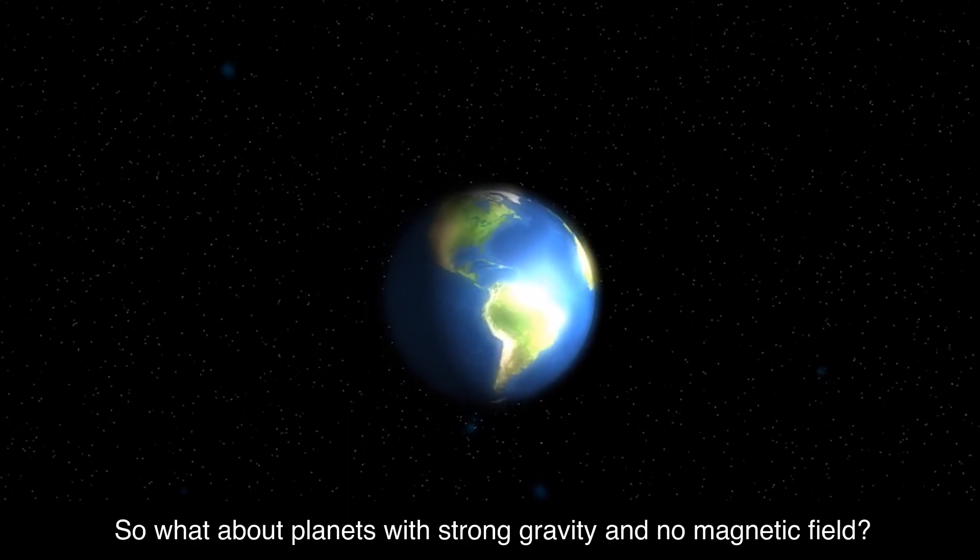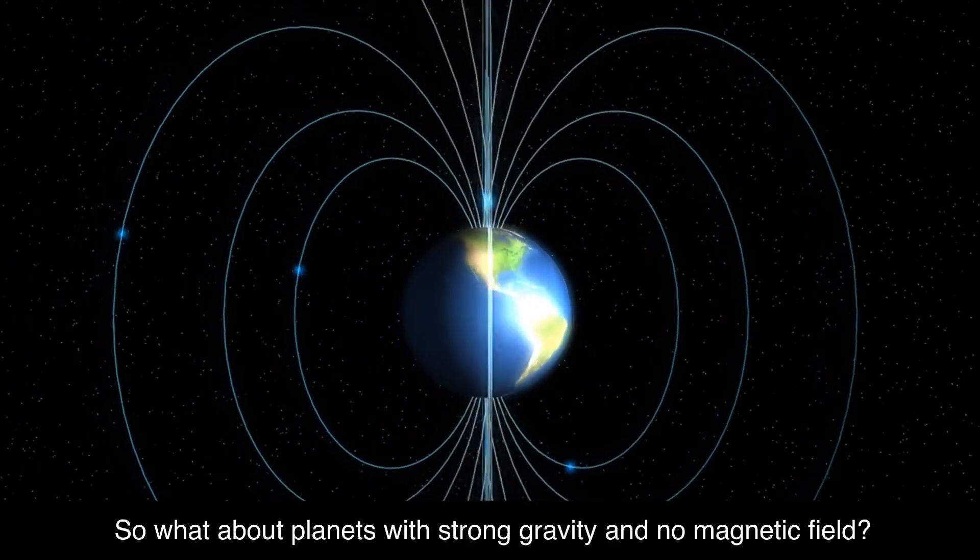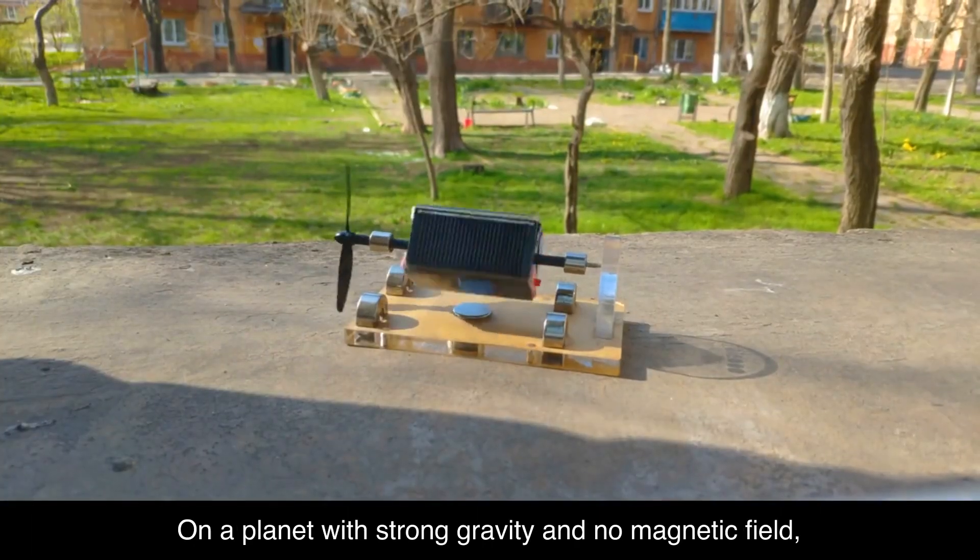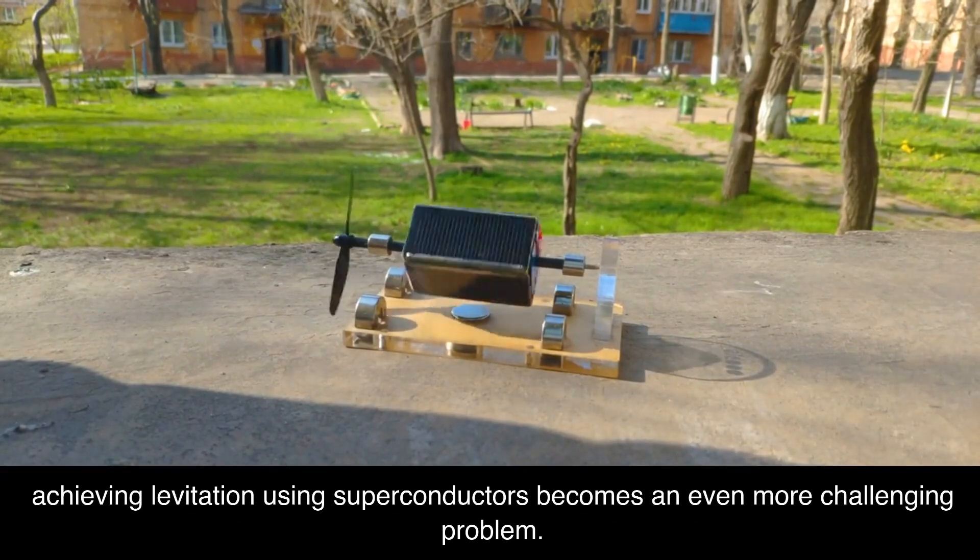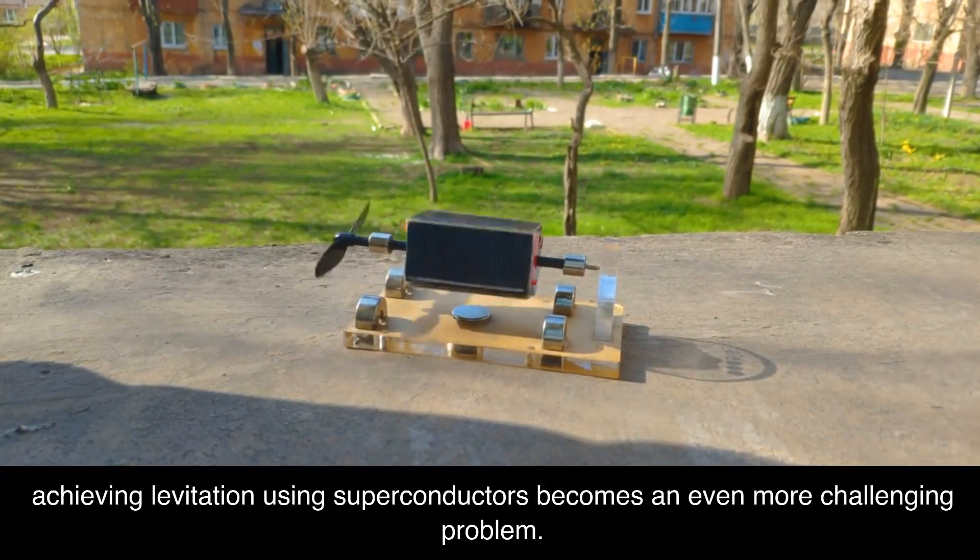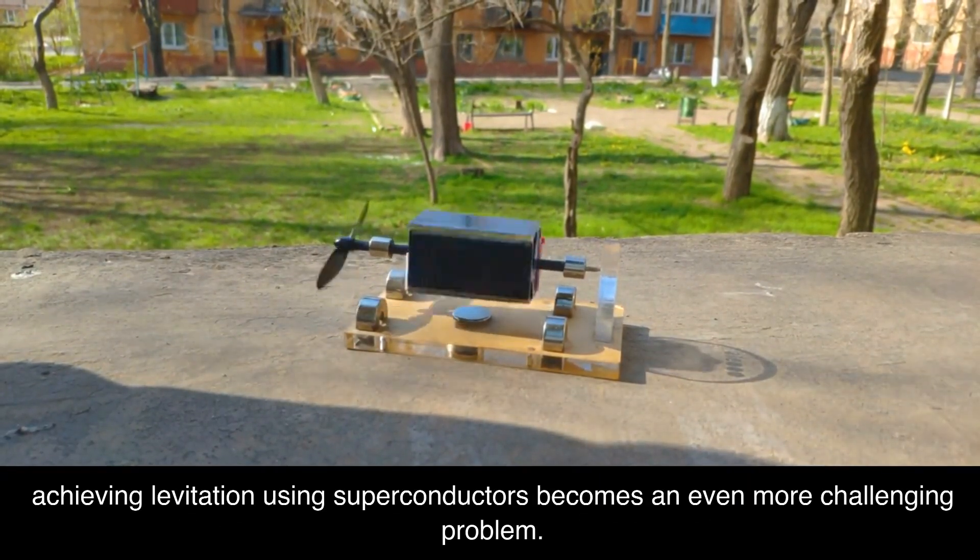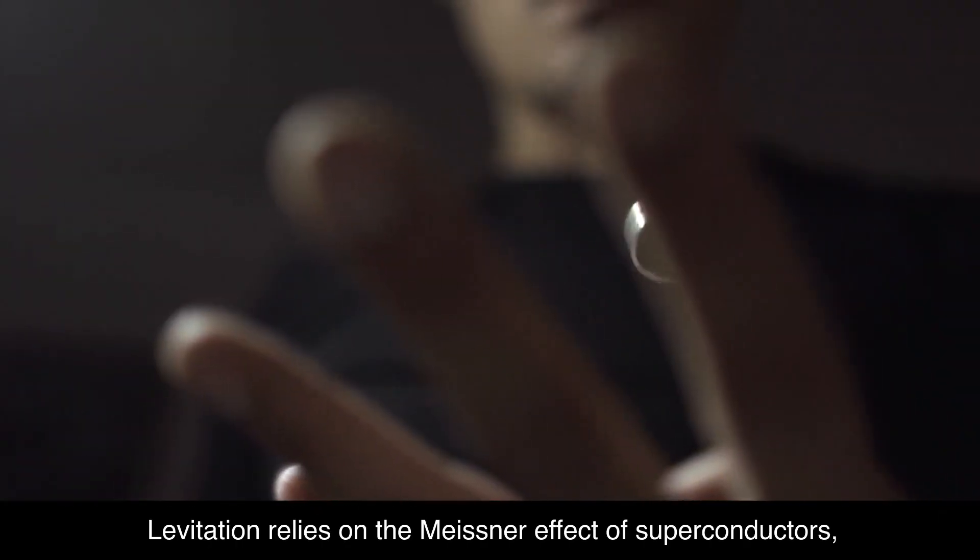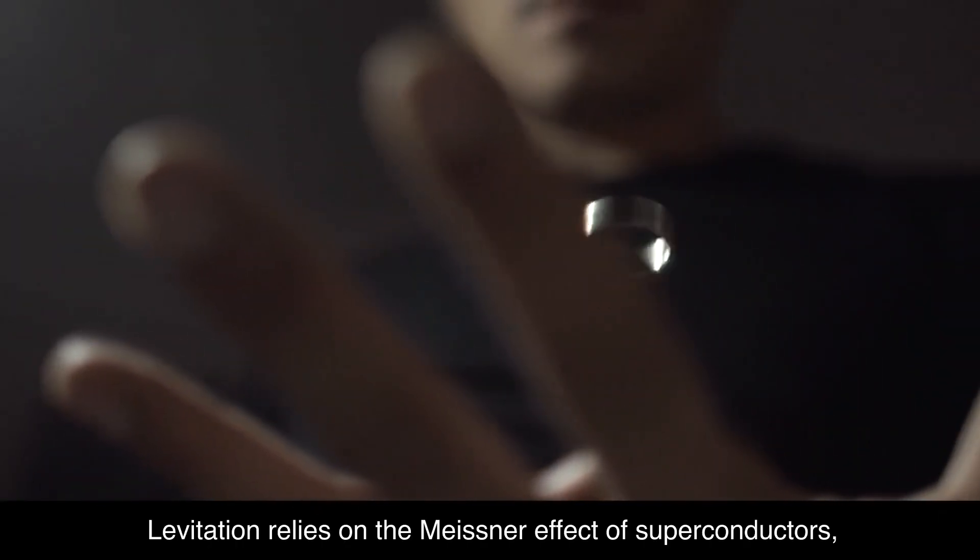So what about planets with strong gravity and no magnetic field? On a planet with strong gravity and no magnetic field, achieving levitation using superconductors becomes an even more challenging problem. Levitation relies on the Meissner effect of superconductors.